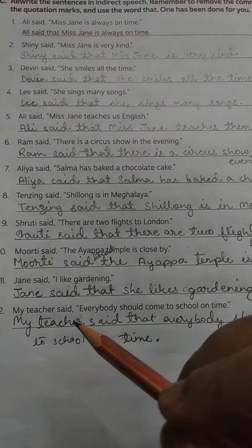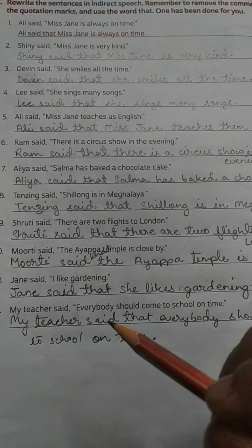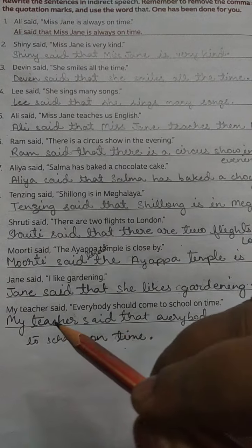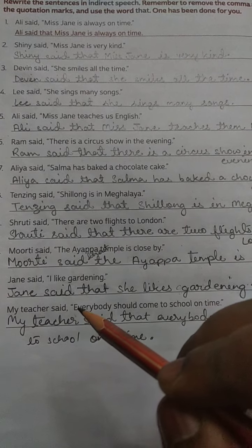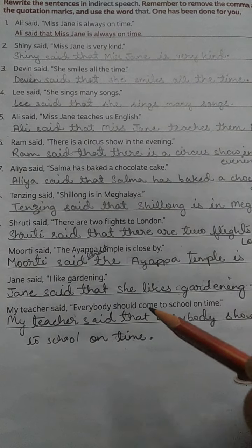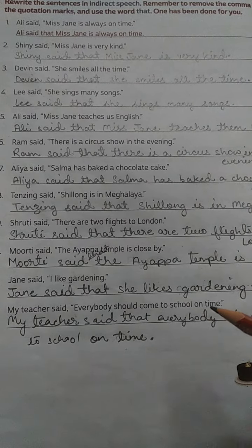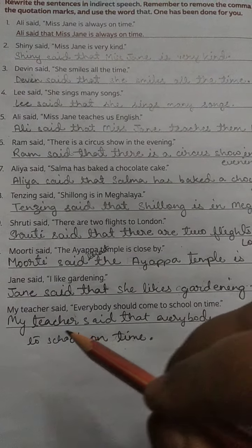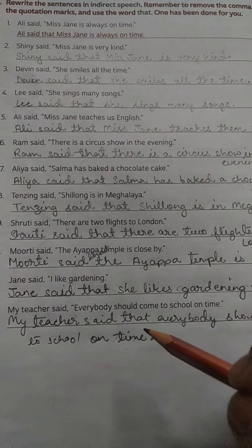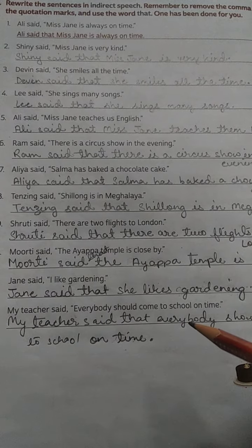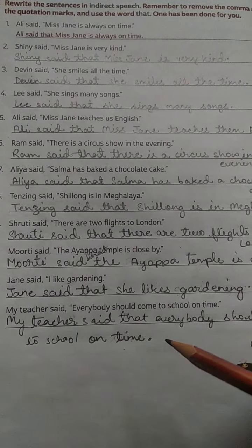Number 12. My teacher said, comma, inverted commas open, everybody should come to school on time, inverted comma closed, full stop. Answer: My teacher said that everybody should come to school on time, full stop.